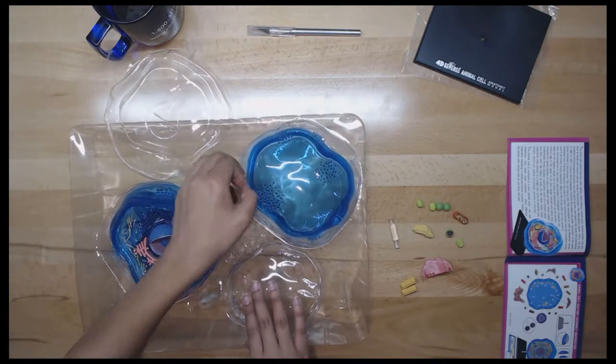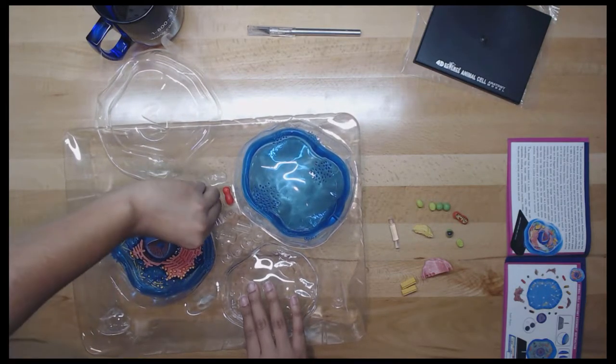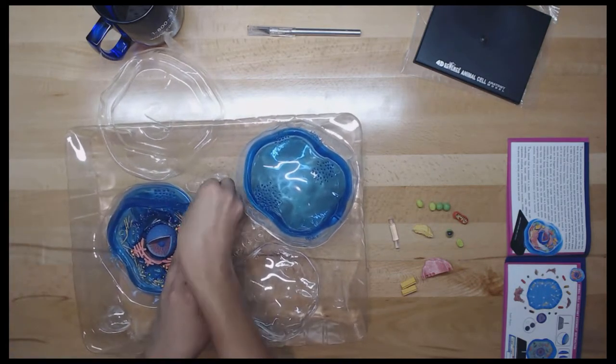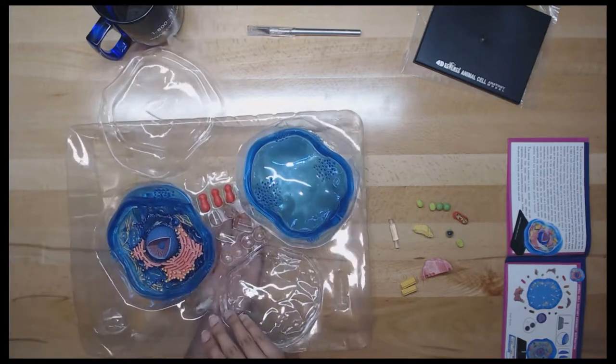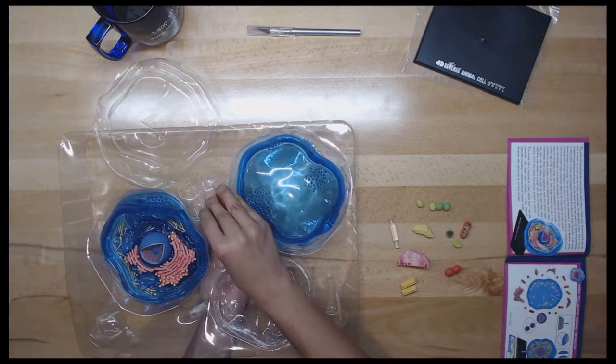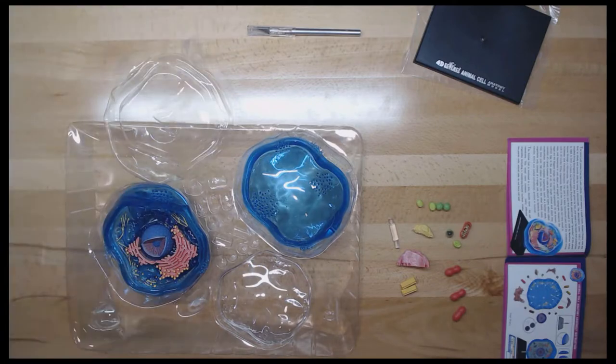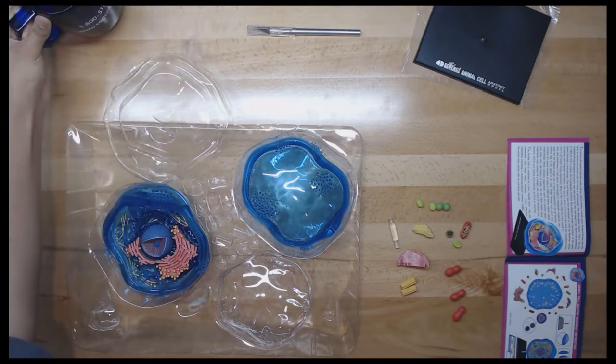Next is smooth endoplasmic reticulum. Endoplasmic reticulum is a vast network of membrane-bound vessels and tubules responsible for the production of hormones and other secretory products. The smooth endoplasmic reticulum, or ER, has different functions depending on the specific cell type.